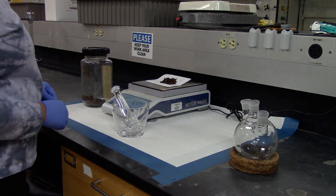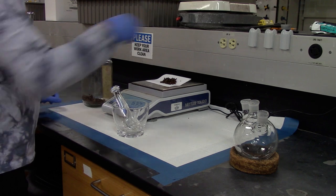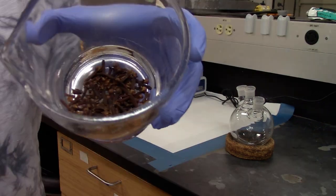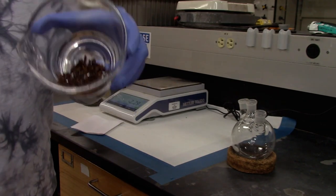Today we are going to do steam distillation and extract eugenol from clove. We will start with about 6 grams of clove and crush it.